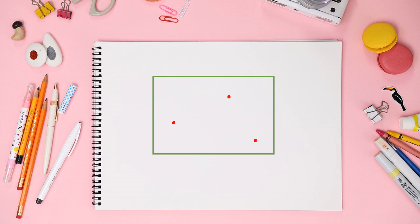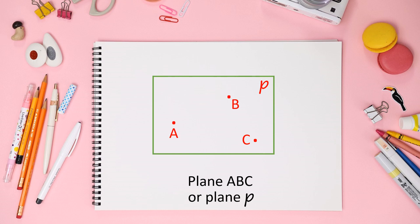We draw three points on the plane but not in a line, and it is called plane ABC. Another way to represent a plane is by writing a small letter alphabet at the side of the plane, and we read it as 'plane b'.